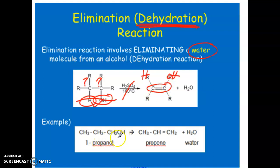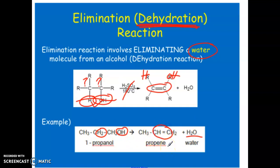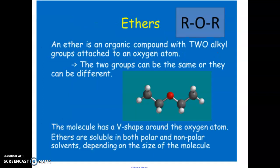For example, with 1-propanol, the only place to remove a hydrogen from is the carbon adjacent to it, since the OH is at the end of the chain. The OH and that hydrogen leave as water, and a double bond forms — the opposite of hydration. That's dehydration. We'll pause here and start a fresh section on ethers.